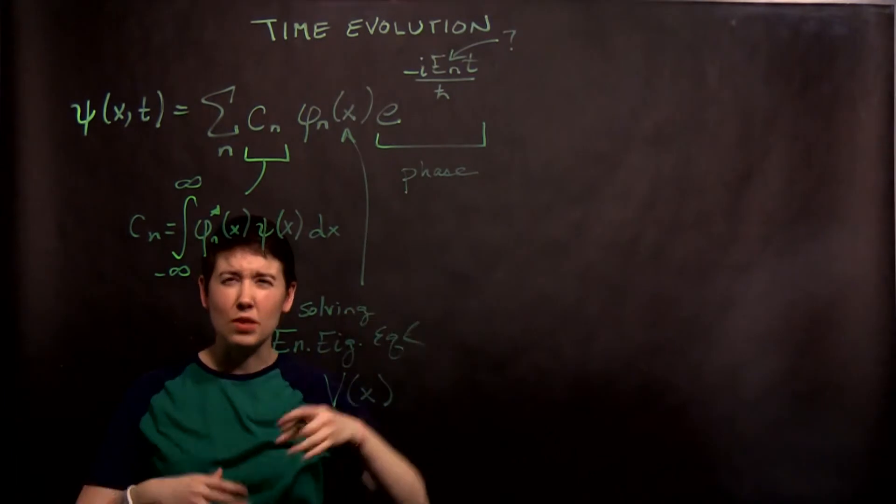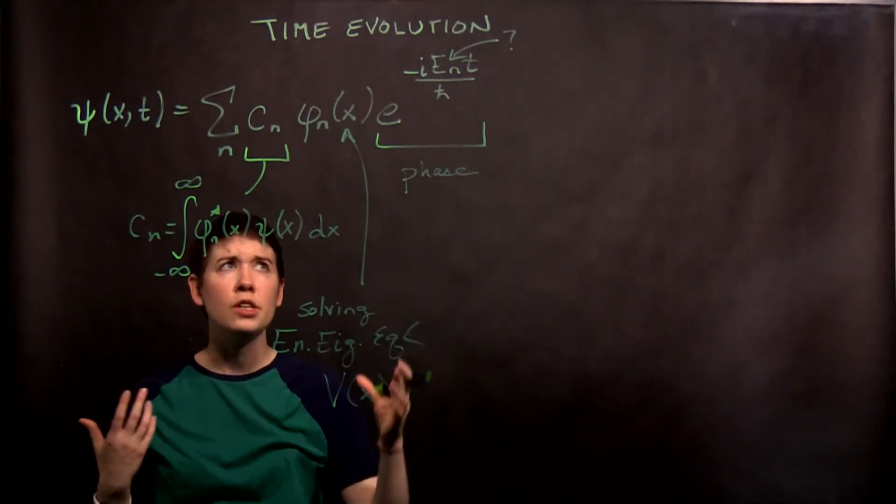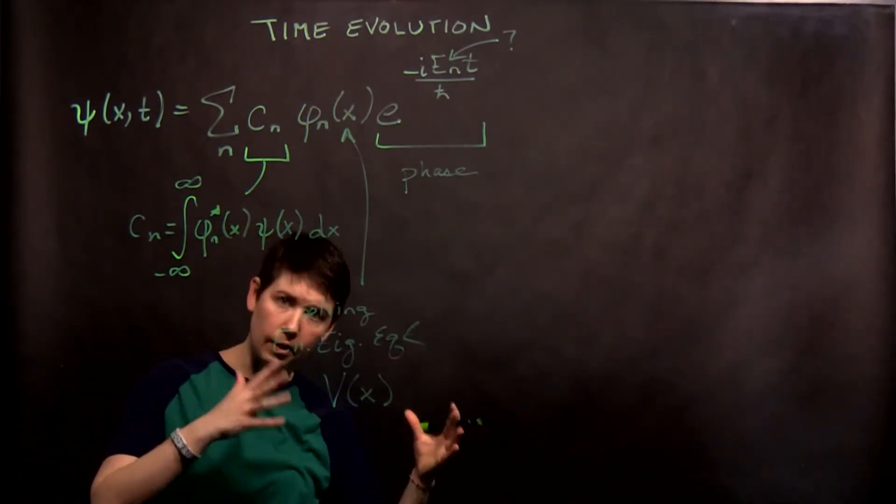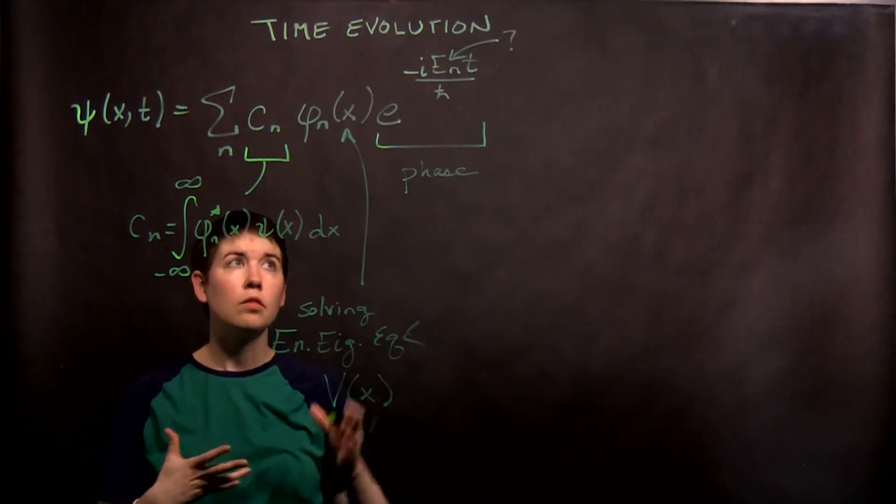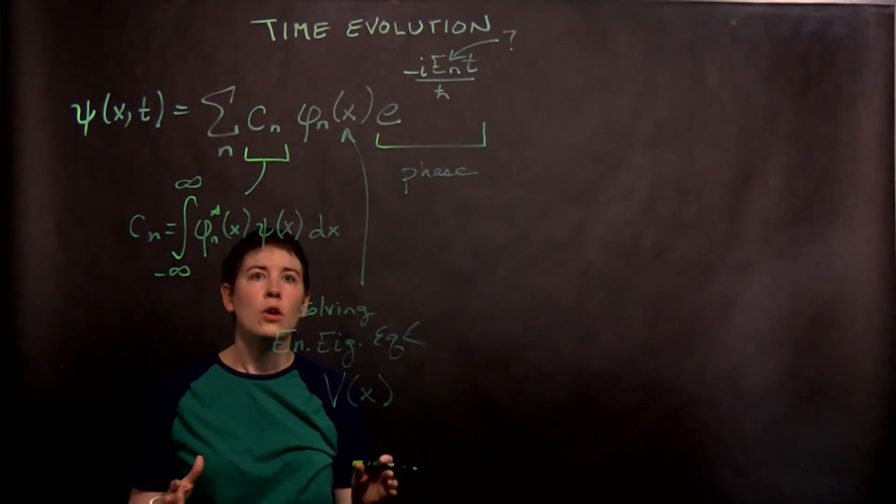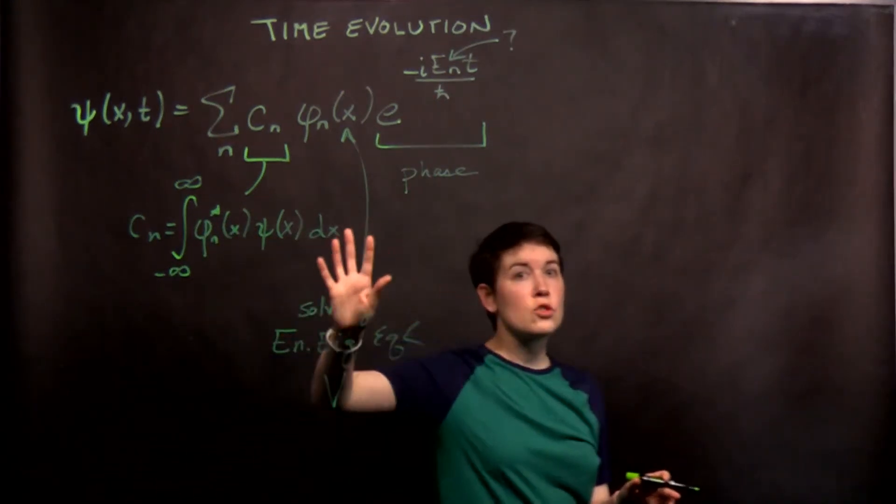So we have to know what that is, and that's again coming from our energy eigenstate, what that energy in particular is. But then this phase is the same thing that we had when we were looking at spin. We can think of this as coming from the Schrodinger equation, that the time derivative relates to your energy. So we get this.